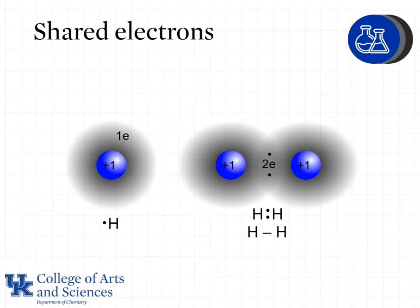In covalent bonds, which are in molecular compounds, electrons are being shared. Let's look at a simple example with hydrogen. Hydrogen has one electron, which is also its valence electron. Two electrons form a bond, so each hydrogen contributes one electron and they share those two electrons, and that forms the bond between the two hydrogen atoms.